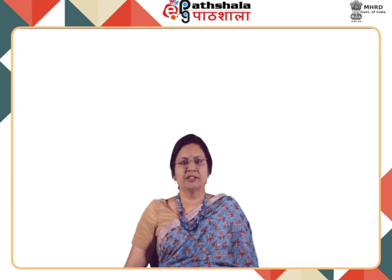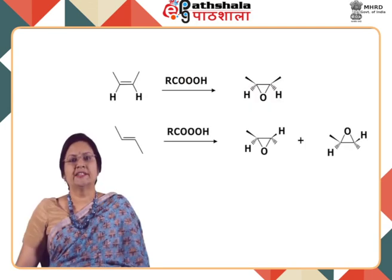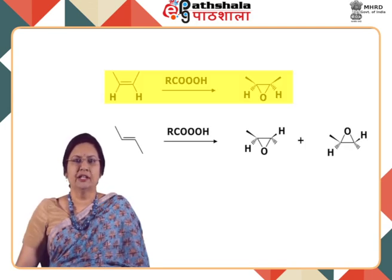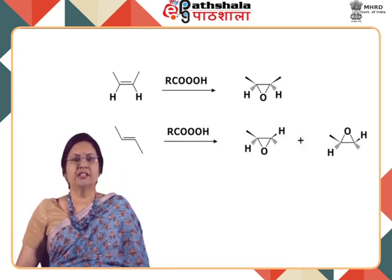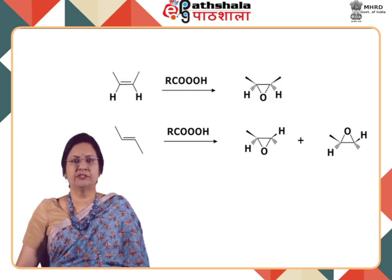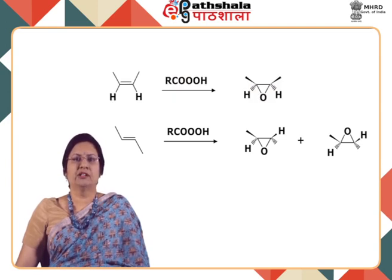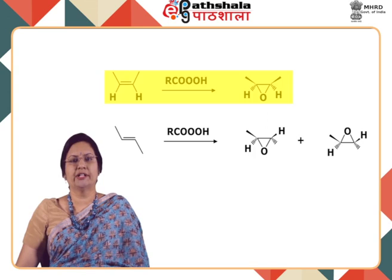Due to the reaction being a concerted process, the bonds cannot rotate. There is no opportunity for the relative positions of the groups bonded to the carbons of the alkene to change. Therefore, a cis alkene will form a cis epoxide, whereas a trans alkene will form a trans epoxide — the reaction is syn-stereospecific. Starting with a cis alkene where the two hydrogens are on the same side and the two alkyls on the other side, reacting with the per acid gives a cis epoxide.